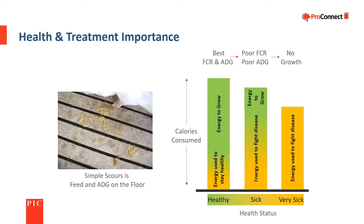Health, like barn environment, can have a big impact on feed conversion and average daily gain. As in the previous graph, the bar height represents the calories consumed. Healthy pigs are able to use most of the energy they consume for growth and have the best or lowest feed conversion and the highest average daily gain. Pigs that are sick eat less because they don't feel well and use more of the energy they consume to fight disease. Although a very sick pig may still eat feed, most if not all of the energy from it goes to fight disease, which can result in little to no growth.